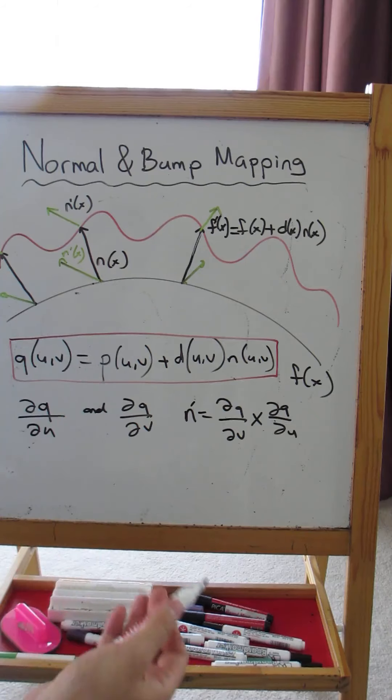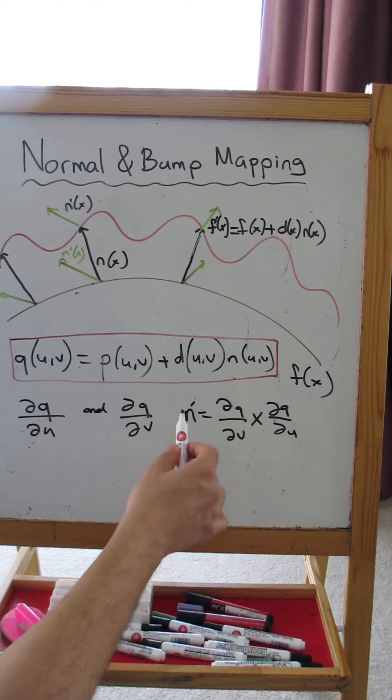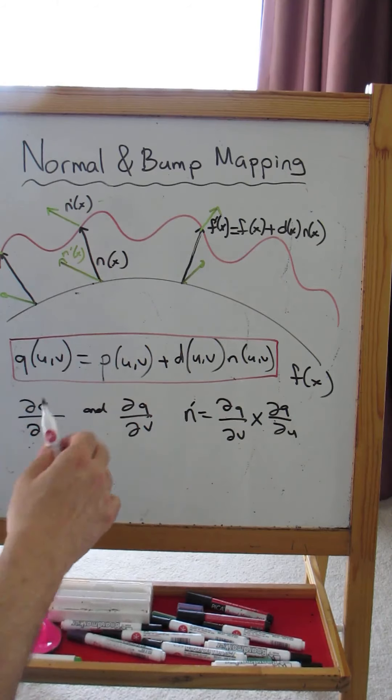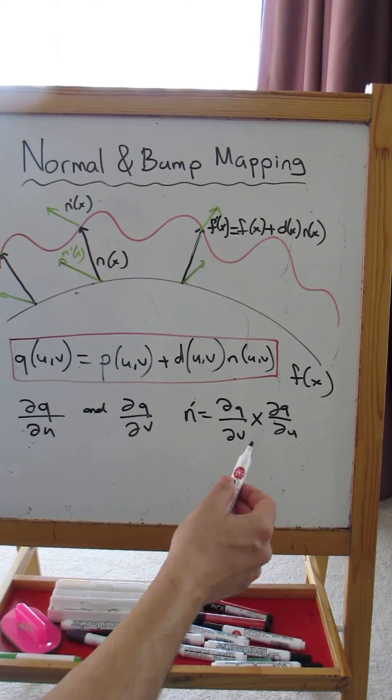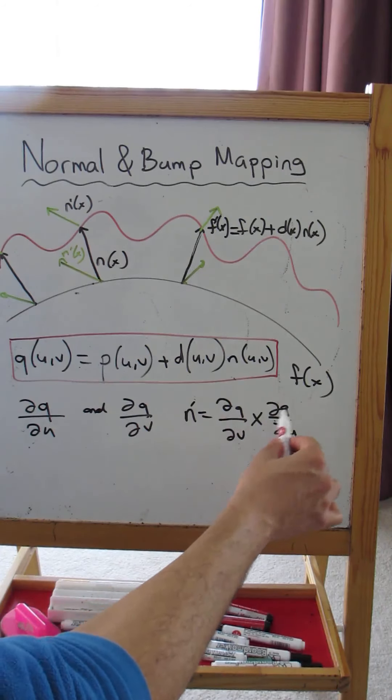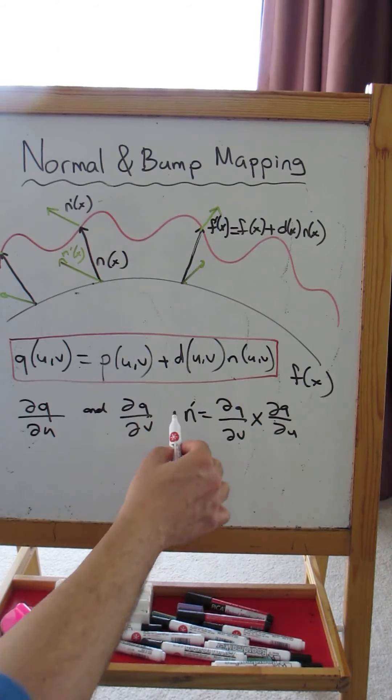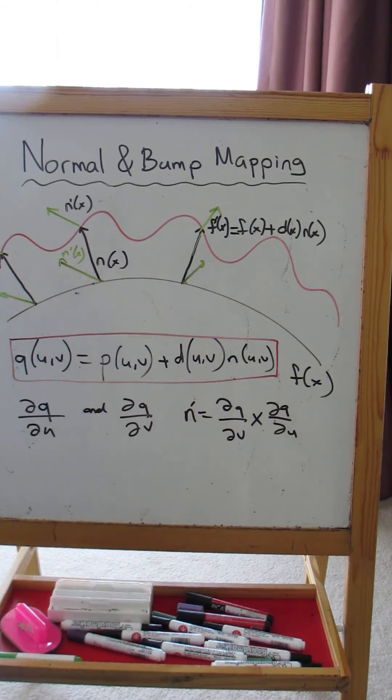But alternatively, if you find that n' is pointing in the opposite direction as n, then you can flip n'. So it's not critical actually. You could use dQ/du cross dQ/dv and then check by a dot product the angle between n' and the original n. If they are in opposite directions, you can flip n'.